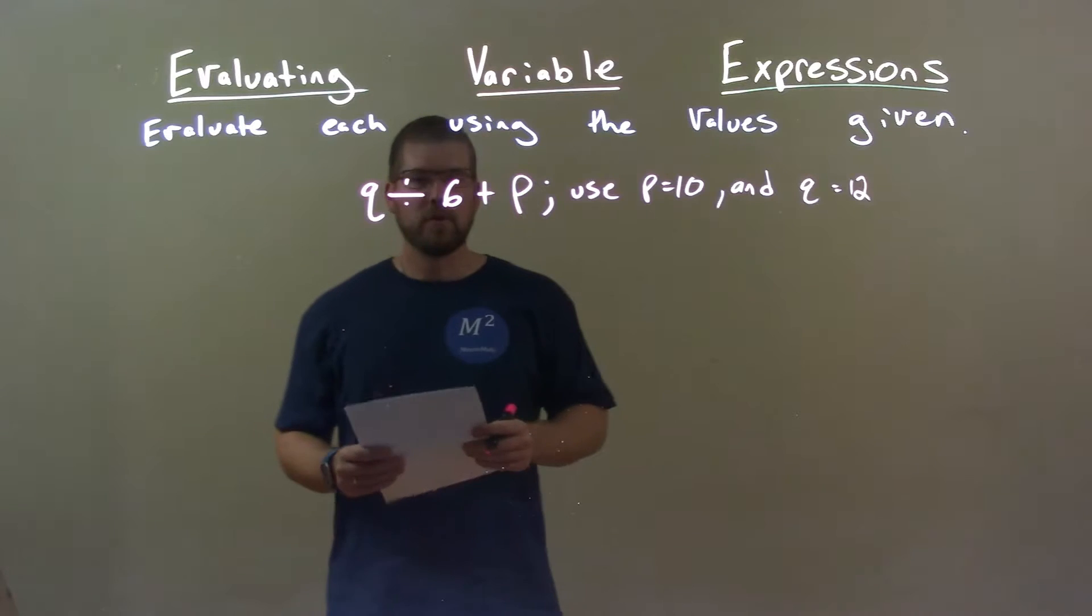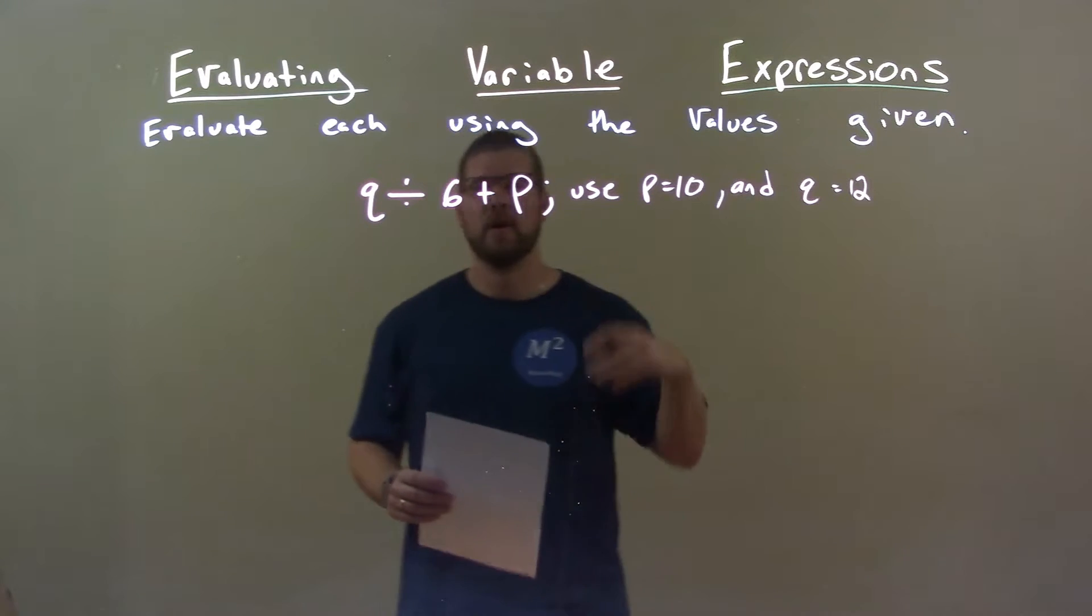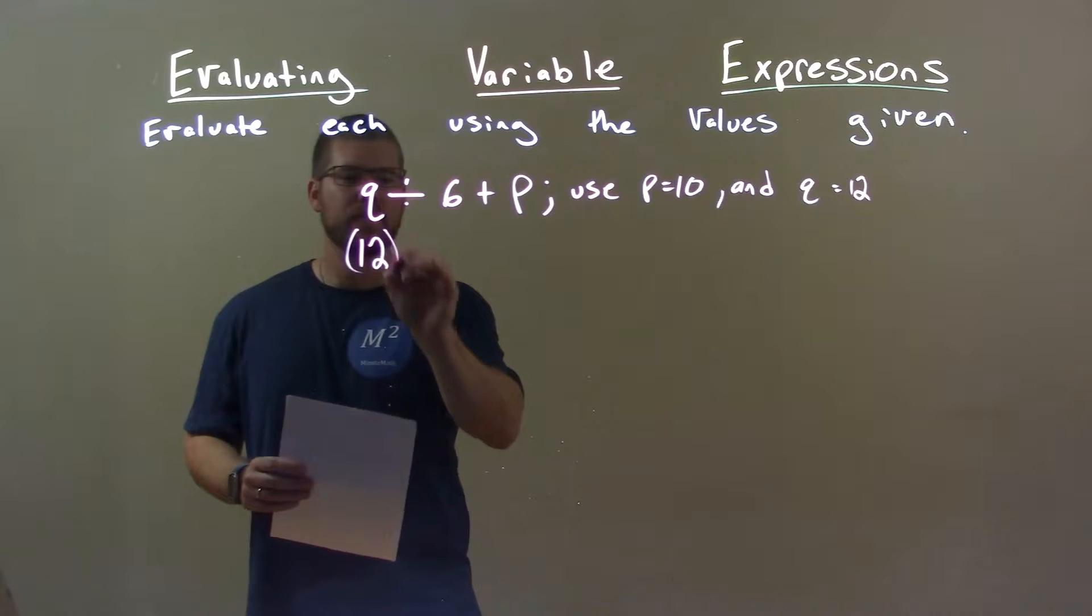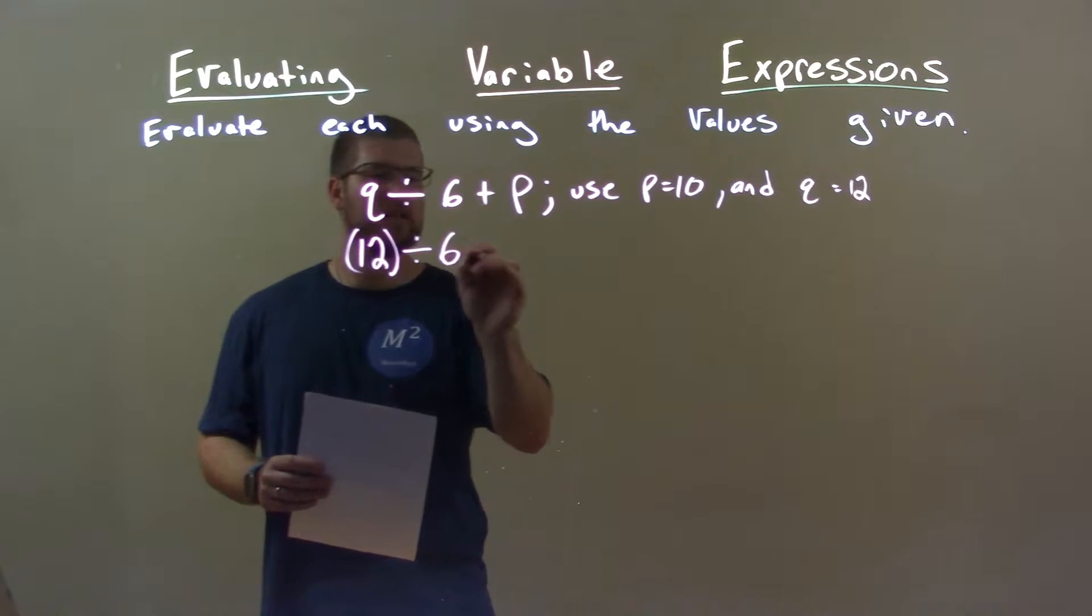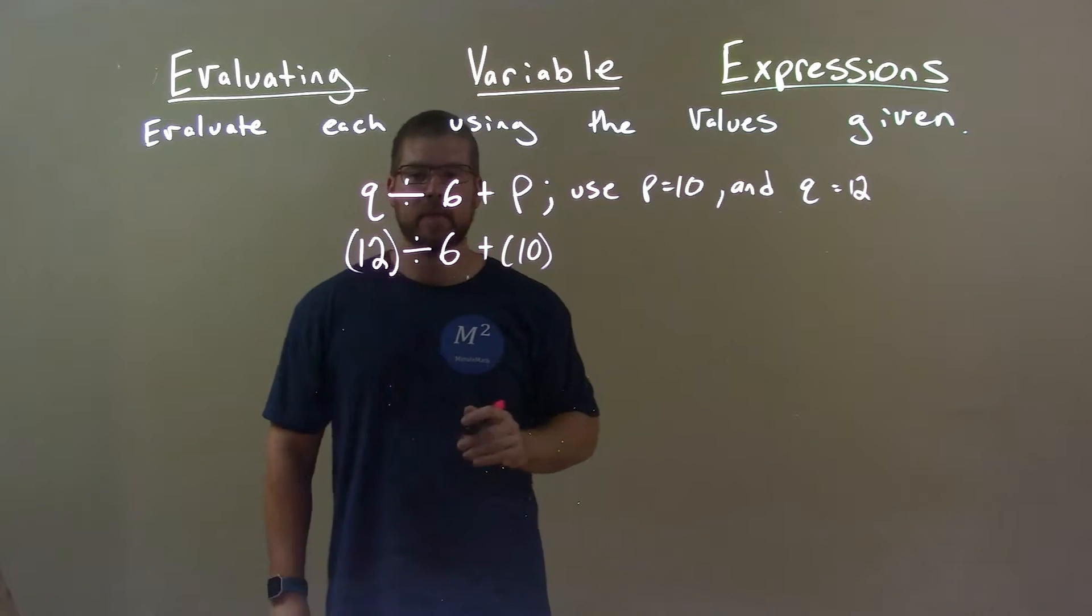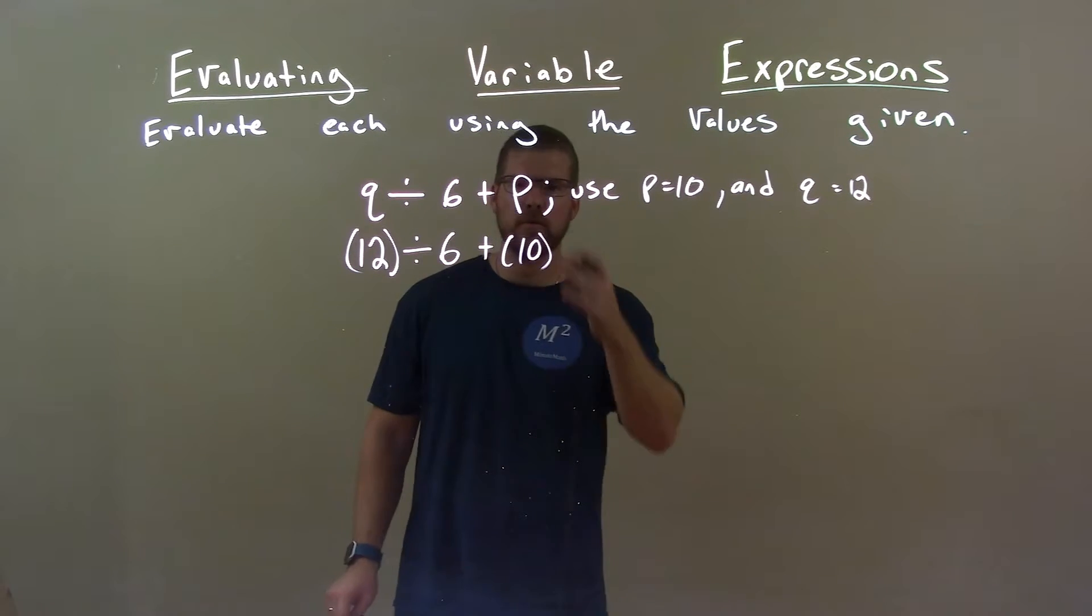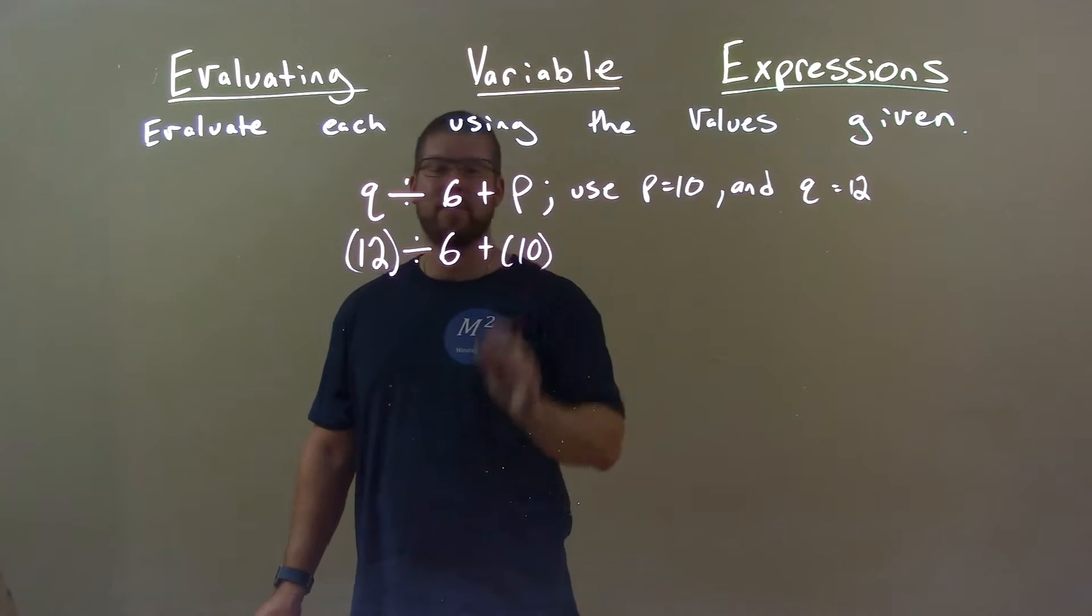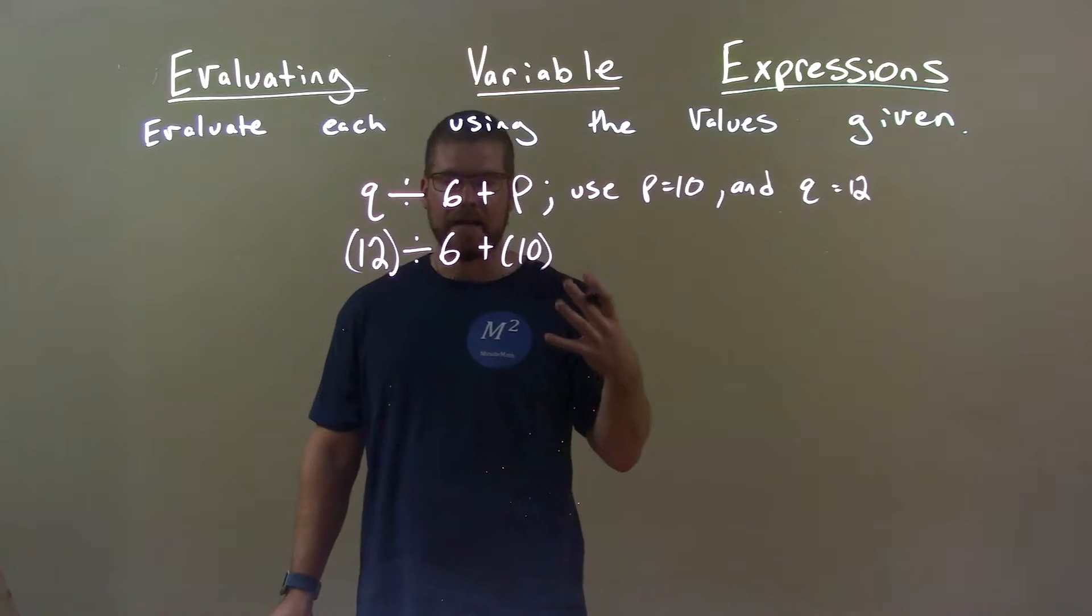Alright, so first thing, substitute our variables in. Q is 12, so we have 12 here divided by 6 plus the letter P which is 10. Now parentheses help when you substitute them in. I like to show which ones I substitute and put them in parentheses. It helps organize it.